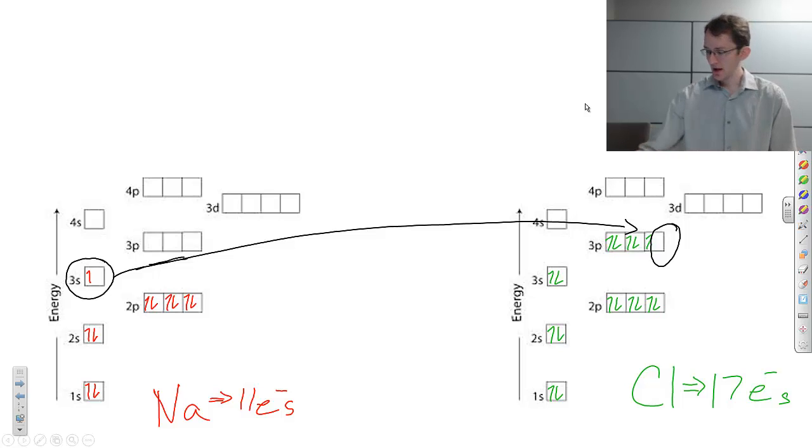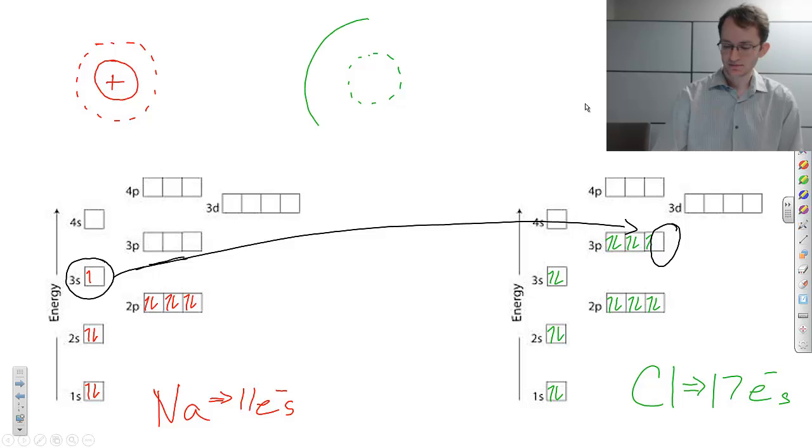What ends up happening is the sodium atom was originally this size. The electrons floating around was that size. What happens when it gives up that electron is it becomes smaller and it becomes positively charged. And the chlorine atom used to be this size, and it becomes larger, and it becomes negatively charged.